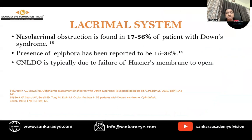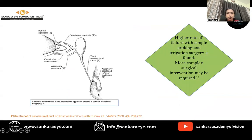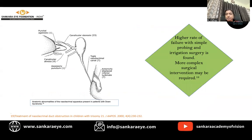Nasolacrimal obstruction is found in 17% to 36% of patients with Down syndrome, and epiphora has been reported in about 15% to 30%. Congenital nasolacrimal duct obstruction is typically due to failure of Hasner's membrane to open. Causes in these children may include punctal agenesis, canalicular stenosis, canalicular atresia, accessory punctum, tight nasolacrimal canal, and anteriorly placed inferior turbinate. There is also a high rate of failure with simple probing, so more complex surgical intervention may be required.